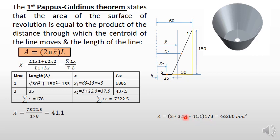Now apply the Pappus-Guldinus theorem. The total length is 178—the small segment and the large segment. When you multiply this, you will get 46,280 mm². In this way, you can use the first theorem of Pappus-Guldinus for determining the surface area of a surface of revolution. Thank you.